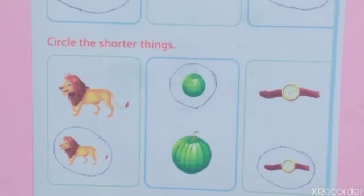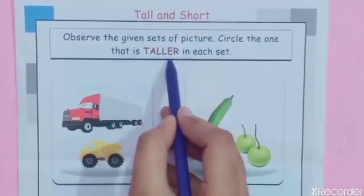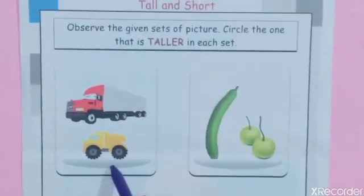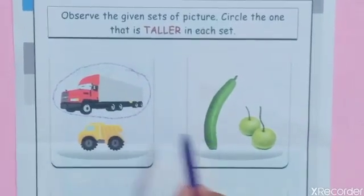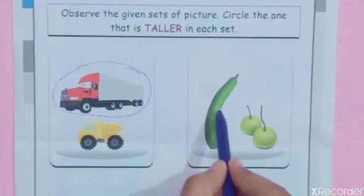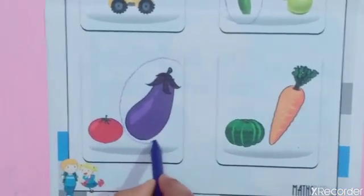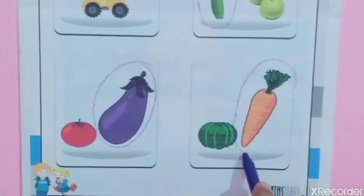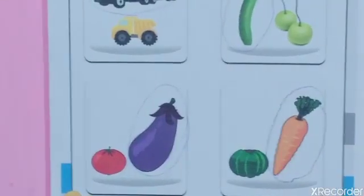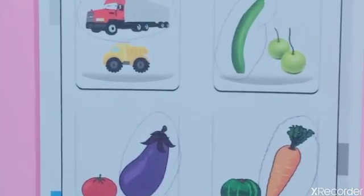Now we do the next worksheet. Observe the given sets of pictures. Circle the one that is taller in each set. See in this picture, which one is taller? This one is taller. Next picture, which one is taller? Next picture, which one is taller? Next picture, which one is taller? This one is taller. Next picture, which one is taller? This one is taller. Okay, that's all for today. Do practice at home. Okay, bye, have a nice day.